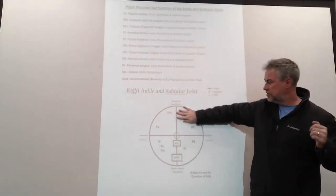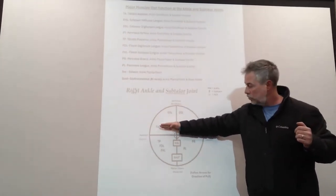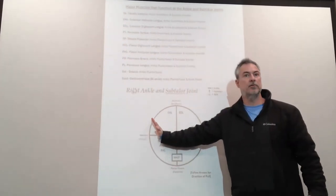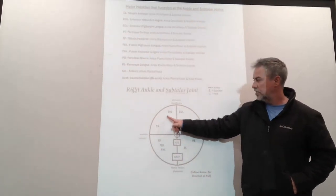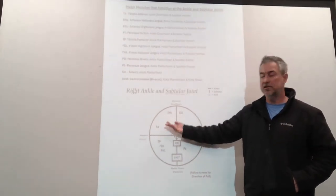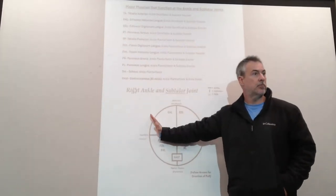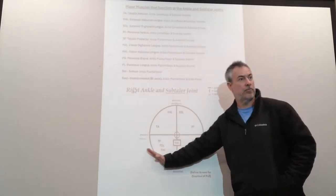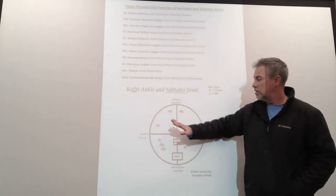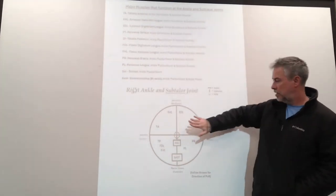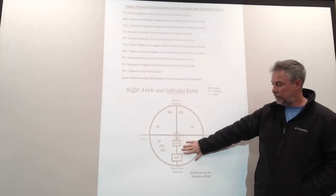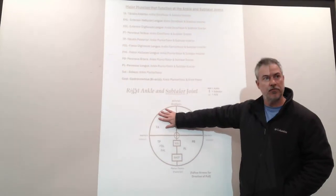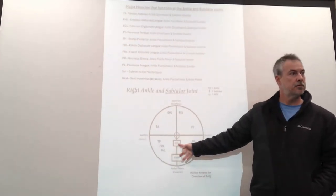When we need our dorsiflexors, the front part should light up in your head. When we need our plantarflexors, the posterior part should light up. Inverters are on the medial side. These muscles will have two functions — anteromedial, posterolateral, posteromedial, anterolateral — that's all it means, just two directions. So we'll have dorsiflexion inverters, dorsiflexion everters, plantarflexion everters, plantarflexion inverters, and these two are just plantarflexors.